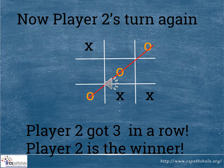Now, player 2's turn again. See where he puts the knot — he has put it in the bottom left corner. Yeah! Player 2 got 3 knots in a row. Player 2 is the winner!